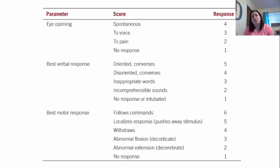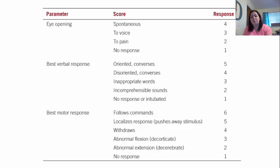If you'll notice on the scale, you cannot get a zero — if you have three points, then you're in a coma with no response in any of the three areas. The lowest you can get is a three. The higher you get, the better the score — the closer you are to being more normal.